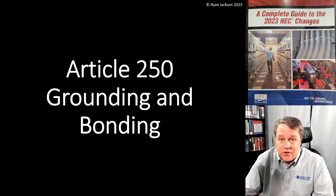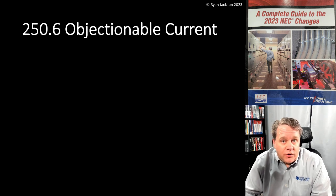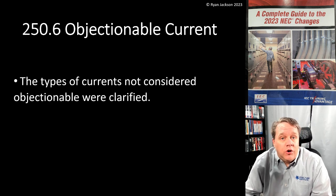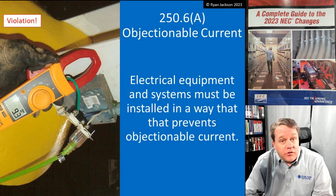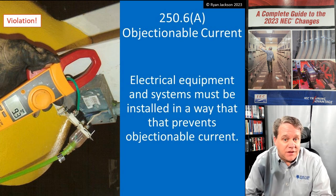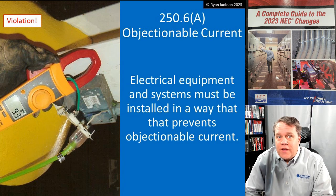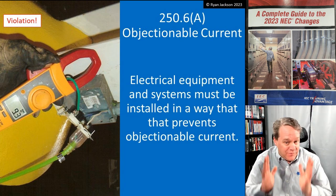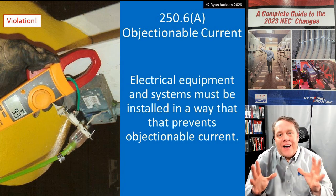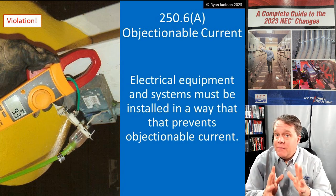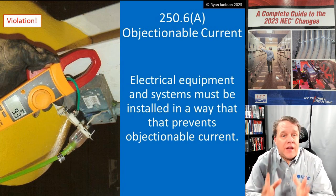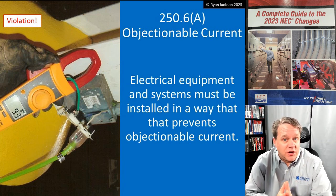Let's start with 250.6 objectionable current — I like what they did here. The types of currents that are not considered objectionable were clarified. Every three years like clockwork somebody wants to define the term 'objectionable current,' and I get that, because the code says you can't have objectionable current but doesn't tell you what that is. Electrical equipment and systems must be installed to prevent objectionable current. Objectionable current is basically neutral current flowing on green wires and metal objects.